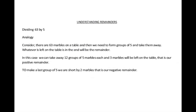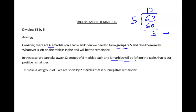When I say if I divide 63 by 5, everyone knows the answer. But let's get a different analogy. I will consider 63 as marbles and I need to make groups of 5. When 63 is divided by 5, the quotient is 12 and the remainder is 3. This 3 is the leftover marble — the positive remainder. To make a complete group of 5, this 3 is falling short by 2, and this 2 is the negative remainder.